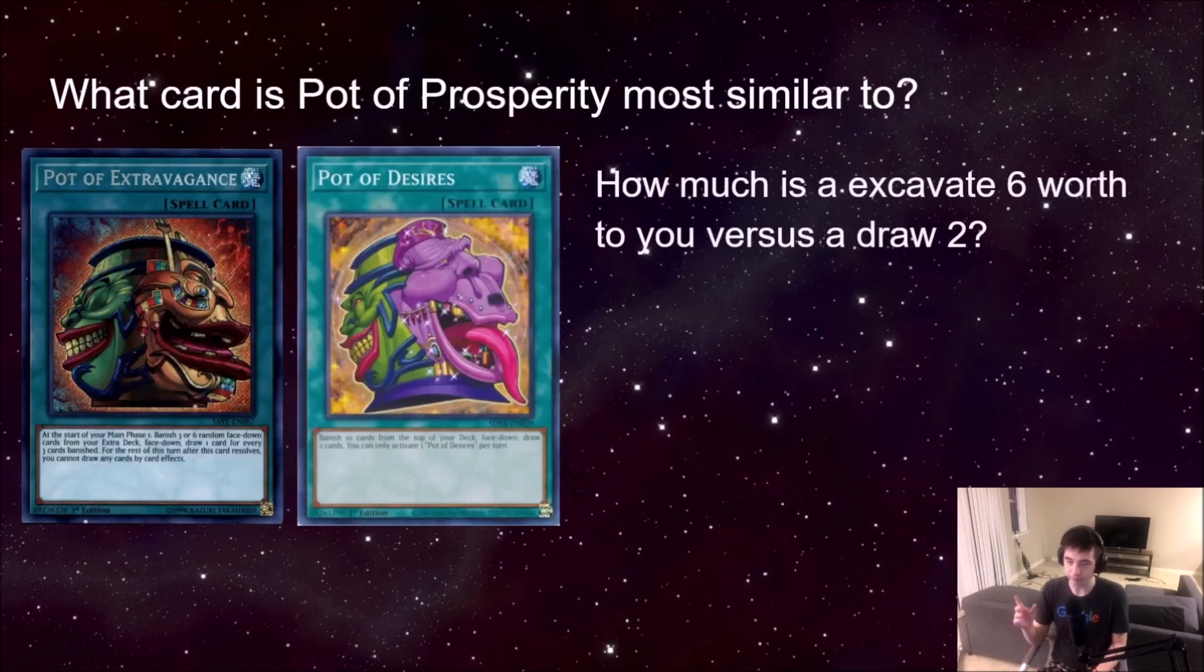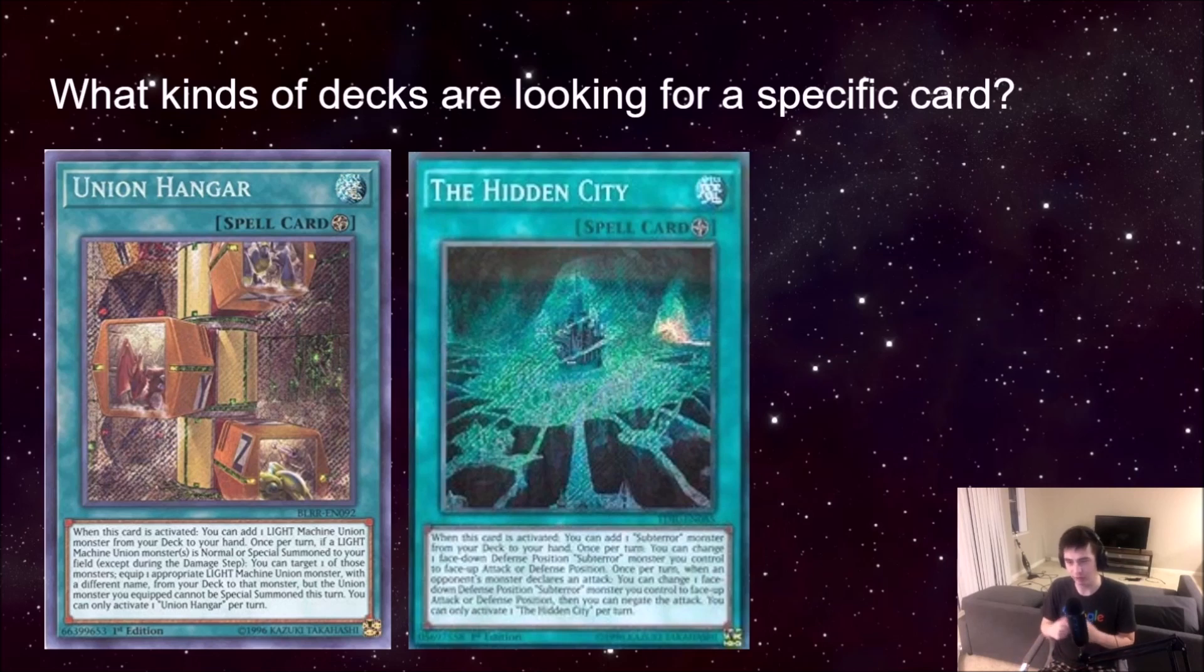So when we're evaluating Pot of Prosperity, how are we going to decide what decks to put it into? The cards I see that are obviously the most similar are the other pot cards. The main question we have to ask ourselves from a math standpoint is, how much is an excavate 6 worth to you versus a draw 2? That's the big question because Pot of Extravagance and Pot of Desires both are draw 2 cards and give you raw card advantage, whereas Pot of Prosperity gives you card selection.